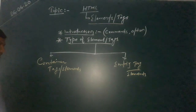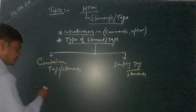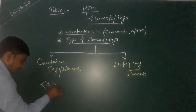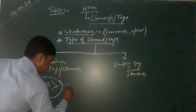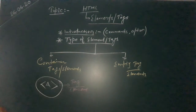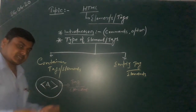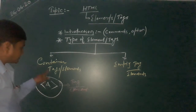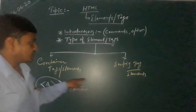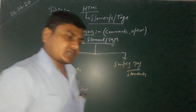Tags are kept inside a left-angle bracket and right-angle bracket. The text or word kept inside these brackets is known as a tag or element. Tags can have two types of positions. Tags which have two positions — a start and an end — are known as container tags. Tags which have only one position are known as empty tags.